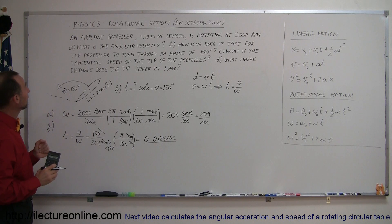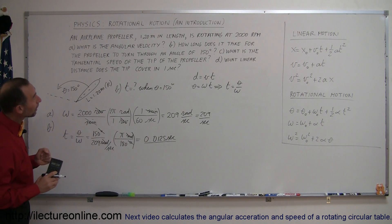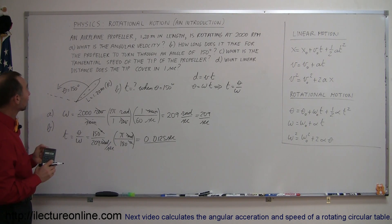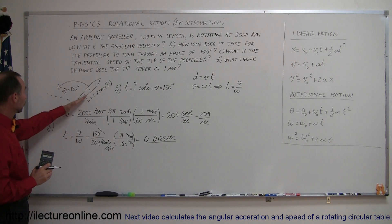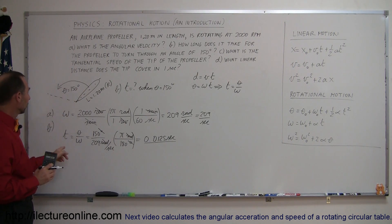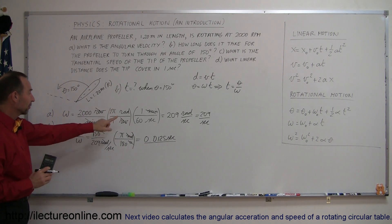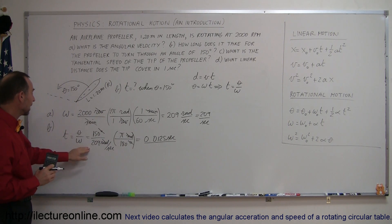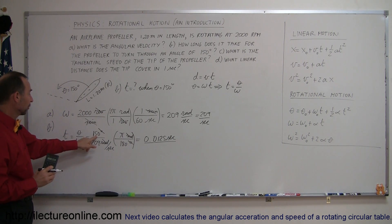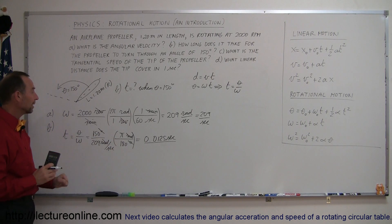In Part B we found the time for the propeller to turn a certain angular distance. We knew the angular distance and the angular velocity from Part A, but we had to convert from degrees to radians.